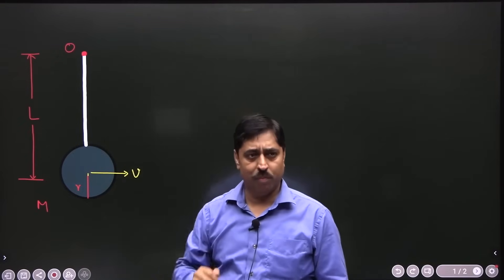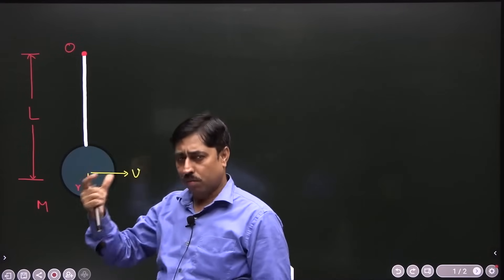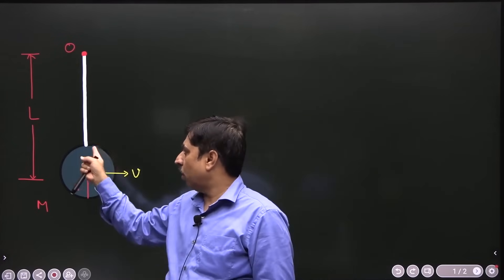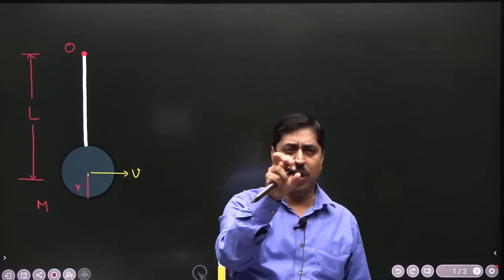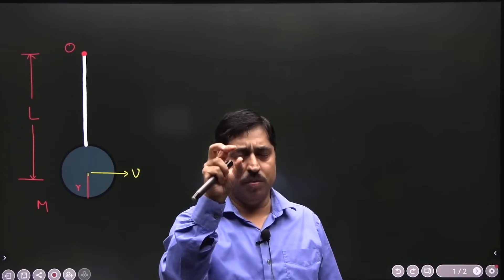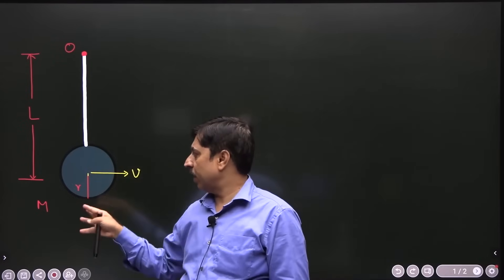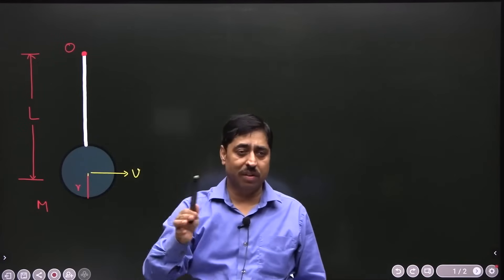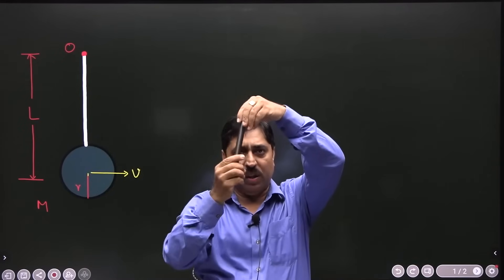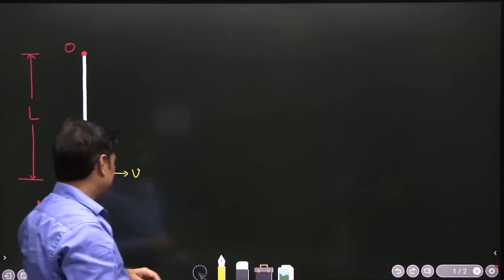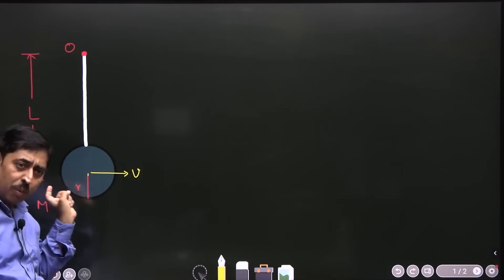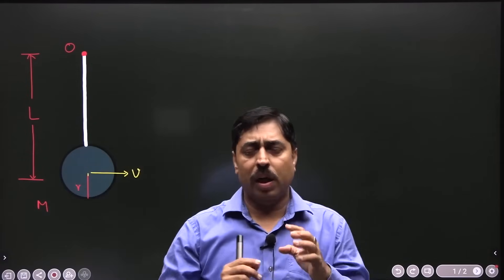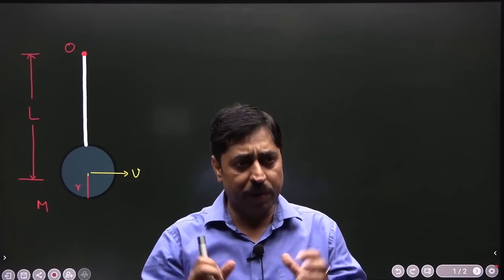Suppose this is a pendulum. There is a massless rod — it is a rigid rod but has no mass — and to this rod a sphere has been welded and attached. The mass of this sphere is M, its radius is R, and from the point of suspension O the center of the sphere is at distance L. So it is a simple pendulum, nothing else. Now, I just push this pendulum bob so that its center acquires a speed v. I push the bob and the center point acquires speed v.